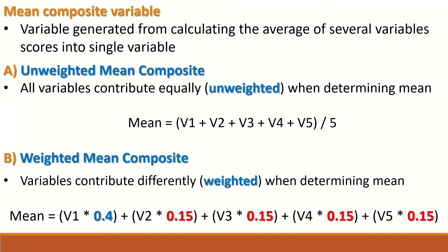For the weighted mean composite, however, variables contribute differently when determining the mean. Each variable can contribute a fraction or a percentage towards the value of the mean, such as in an example where we have five variables and we want variable 1 to represent 40% of the mean value, and variables 2 to 5 to each represent 15% of the mean score. In this way, each variable contributes a specific fraction to the mean, so it is a weighted mean.